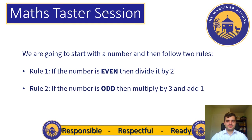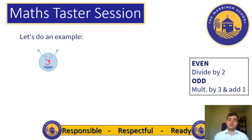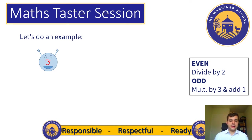So let's do an example. We start with our caterpillar head — we are making caterpillars! We're going to put a number in there. We're going to start with 3 just to see what happens. We check: is that number even or odd? 3 is an odd number because you can't divide it by 2 — it's not in the 2 times table. So we're going to multiply it by 3 and add 1. So 3 times 3 is 9, plus 1 is 10. I'm going to put a 10 in the next part of the caterpillar.